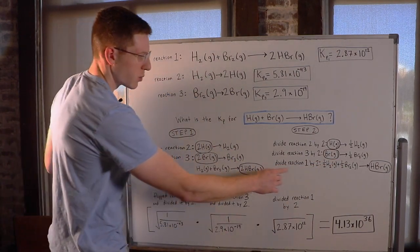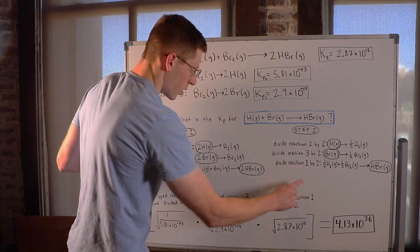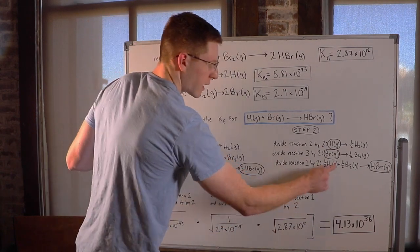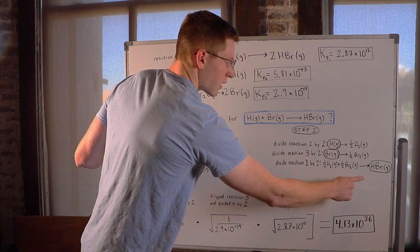And then finally, I divided reaction 1 by 2, so now it's 1 half H2 plus 1 half Br2 goes to HBr. So now I have H, Br, and HBr.